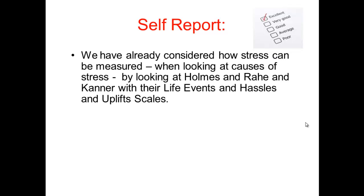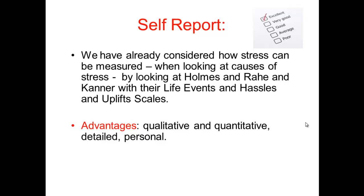The next measure is self-report. This is used quite often for various reasons, and we've already looked at stress as a self-report method when we were looking at the Kanner study, and within that we also looked at the life event scale. So you can use the same study as your piece of evidence here. The advantages: depending on which self-report you use, it can provide qualitative and quantitative data, high levels of detail, and personal information. It's usually pretty cheap and easy to administer, and it can often be the only way of getting that personal detail.